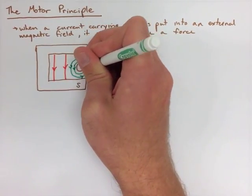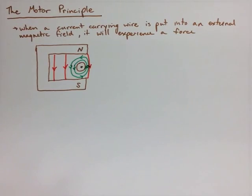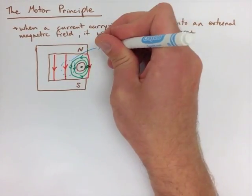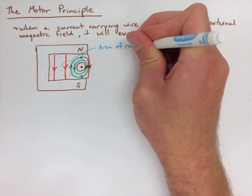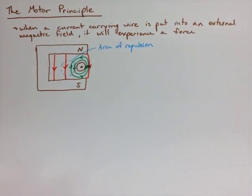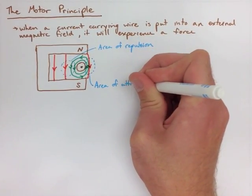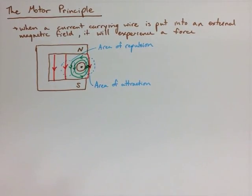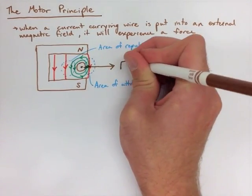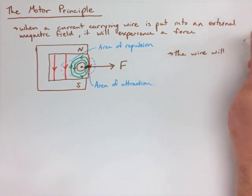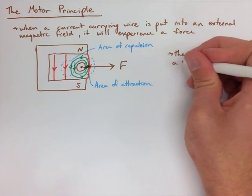With our current coming out of the page, our right hand rule says our field lines should go around to the counter clockwise direction. So now what we actually make is an area of repulsion on the left hand side because the field lines are in the same direction and an area of attraction on the right hand side because the field lines are opposing each other. So what this means is that the wire is going to feel a force to the right and it's going to actually move that way.